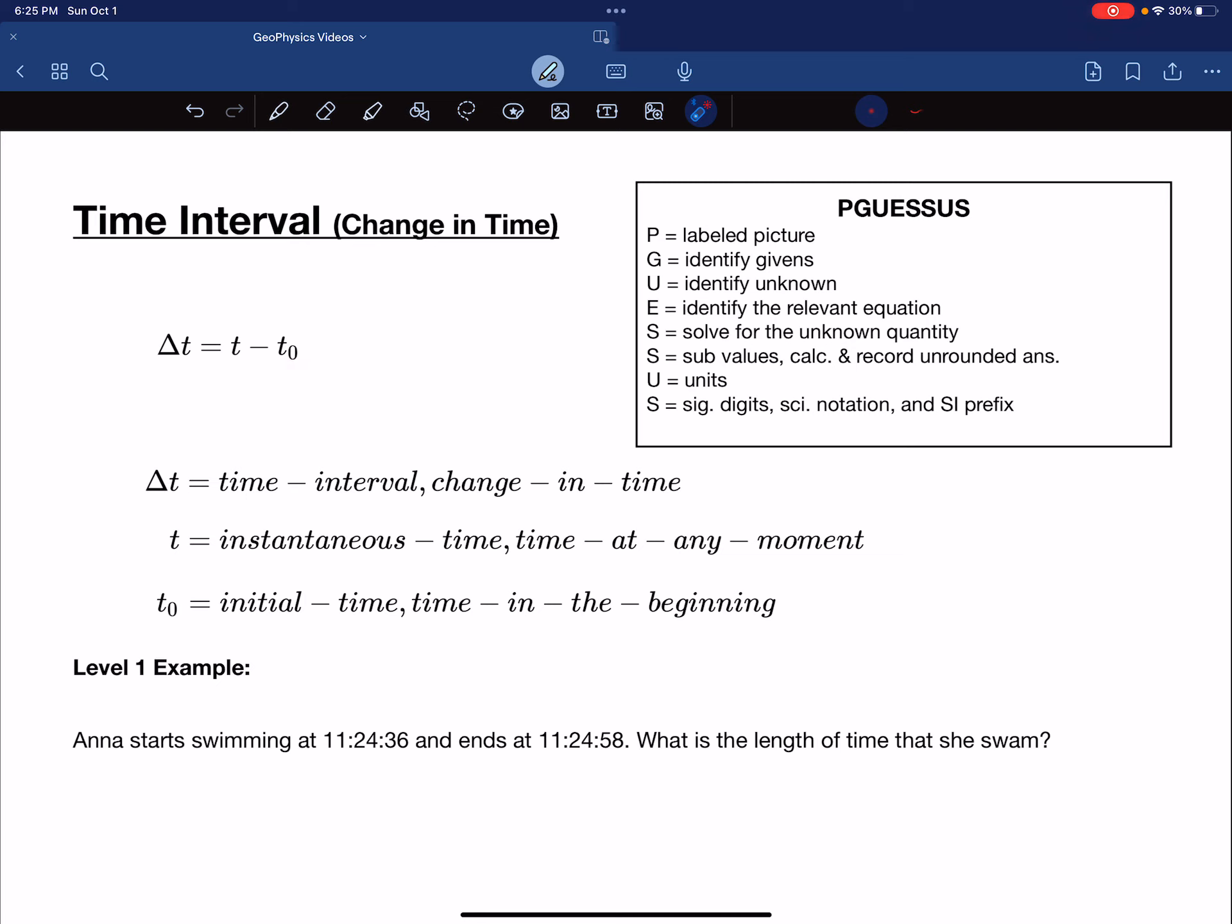And we have that defined here, the time interval, or the change in time, that's what delta t is. The t by itself is the instantaneous time, or the time at any moment. And the t₀ is the initial time, or the time in the beginning, the time when we started.